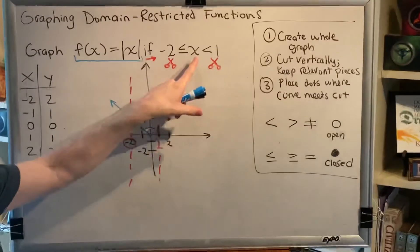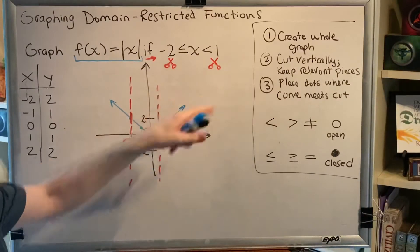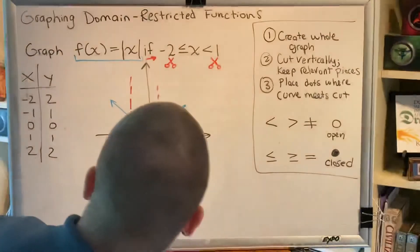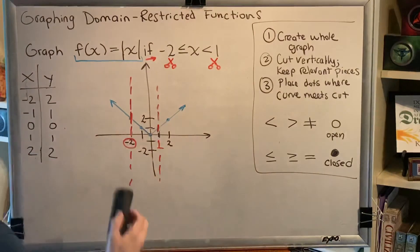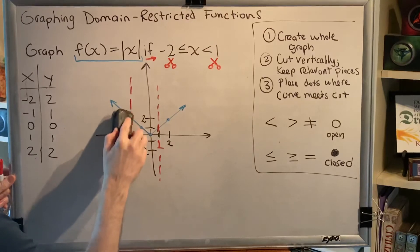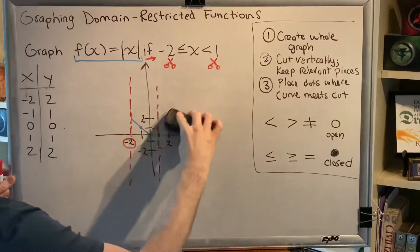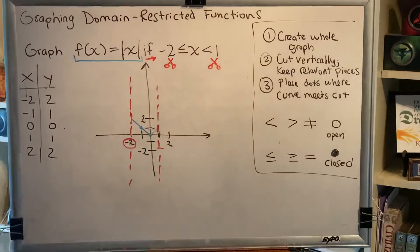And then we keep the part where x is in between negative 2 and 1. Said another way, we keep the part of the blue graph that's in between the red dashed lines. So all of this goes away. All of this goes away.